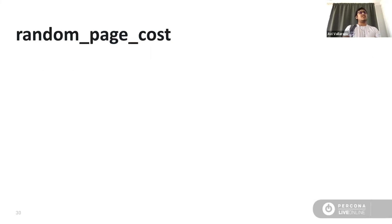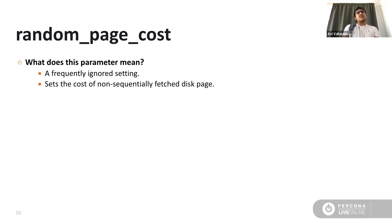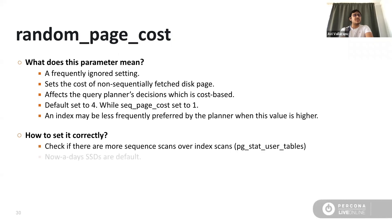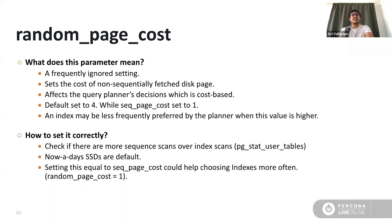Random page cost is a frequently ignored setting. It's the cost of a non-sequentially fetched disk page — especially for indexes. Since the query planner is cost-based, it assumes the cost of fetching an index is huge when random_page_cost is set to its default of 4, while seq_page_cost defaults to 1. Your database might have lots of queries doing sequence scans and you might wonder why an index doesn't improve performance. You can set random_page_cost to the same value as 1 especially when using faster disks — nowadays SSDs are the default.